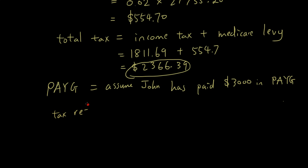So tax refund equals $3,000 minus $2,366.39. Alright, so that's how much he's already paid, that's how much he's only supposed to pay. So get the difference between them. And the answer is $633.61. That's his tax refund.